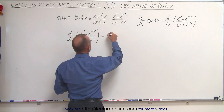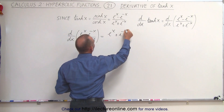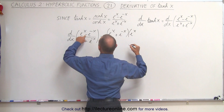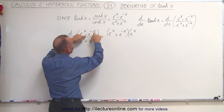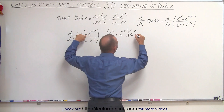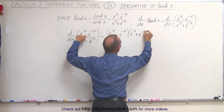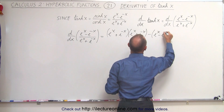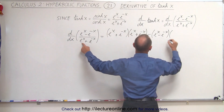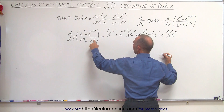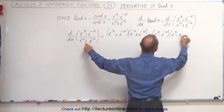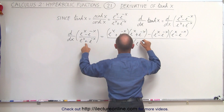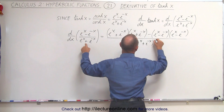We take the denominator, e to the x plus e to the minus x, and multiply times the derivative of the numerator, which is e to the x. When we take the derivative of e to the minus x, we get minus e to the minus x, which cancels the minus sign and makes it plus e to the minus x. Then we subtract the numerator, e to the x minus e to the minus x, times the derivative of the denominator — e to the x, and the derivative of e to the minus x gives minus e to the minus x — all divided by the denominator squared, which is (e to the x plus e to the minus x) squared.